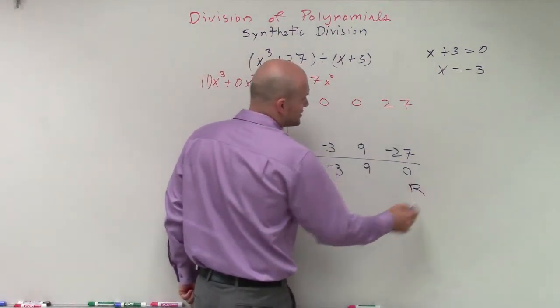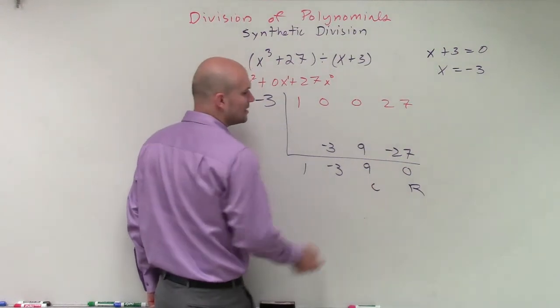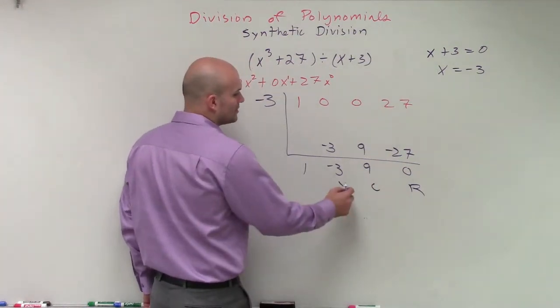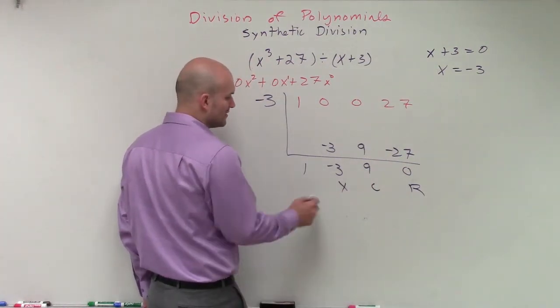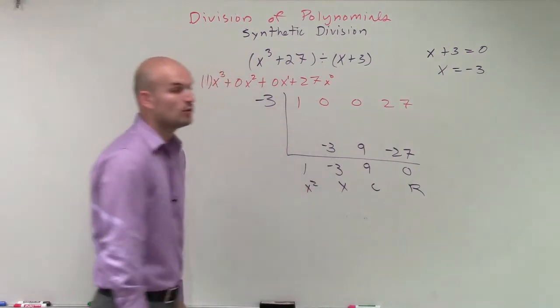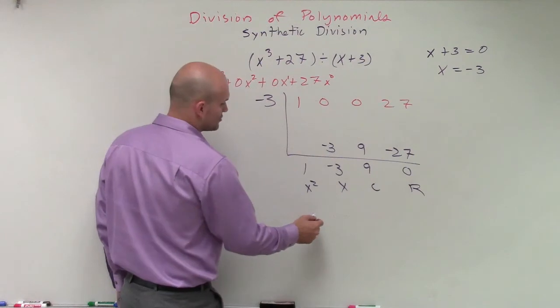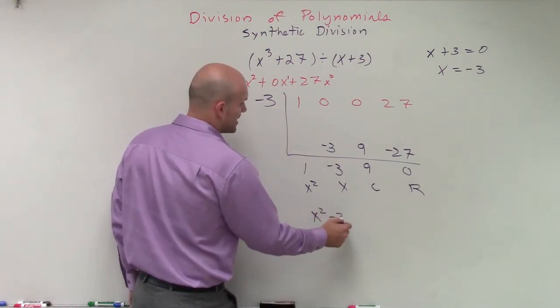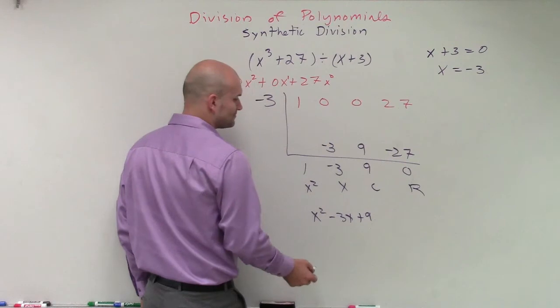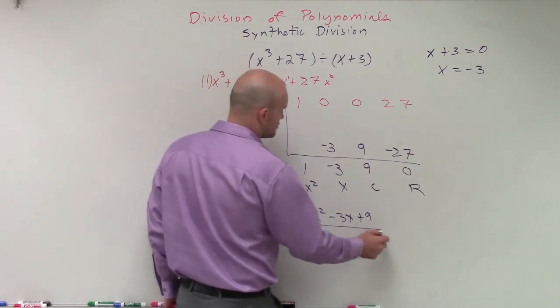Then my constant of my quotient will be 9. The coefficient of my linear term will be negative 3. And the coefficient of my quadratic term will be 1. Then I can just write out my final answer, which will be x squared minus 3x plus 9 is going to be my quotient.